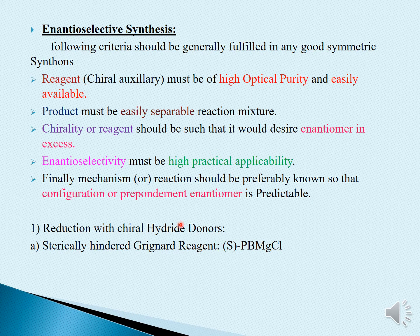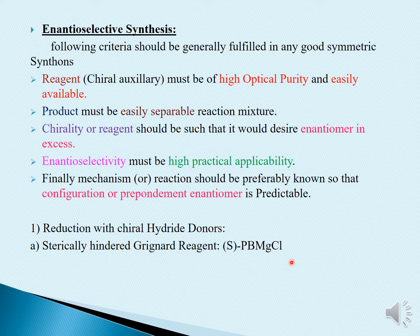Moving on to the reduction with chiral hydride donors — we are taking some reagents and showing how the hydride will act as a donor. The first reagent is S-PhBuMgCl, which stands for S-phenyl butyl butyl magnesium chloride.